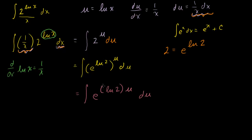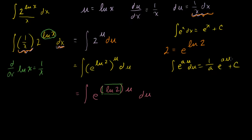Now this natural log of 2 is just a constant factor — it's just some number. We know in general that the antiderivative of e to the au du is just 1 over a times e to the au. This comes from the definition up here and the chain rule: if we take the derivative of this, we take the derivative of the inside, which is just a, multiply that times the 1 over a, it cancels out, and we're just left with e to the au. So this definitely works out.